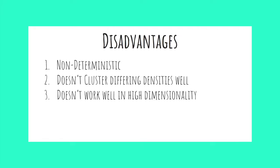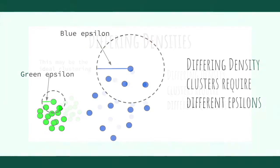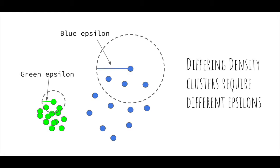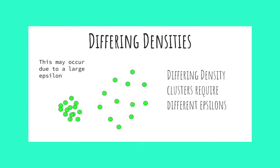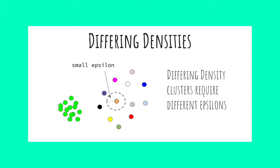Second, DBSCAN does not handle differing cluster densities well. In this image, I've created two clusters — a green cluster and a blue cluster. The green cluster is much more dense than the blue cluster, and achieving appropriate clustering may be hard. The green points would require a small epsilon, but the blue points would require a large epsilon. If epsilon is sufficiently large to cluster the spread-out points, all points may get grouped together. If epsilon is smaller, we may end up with many single data point clusters.